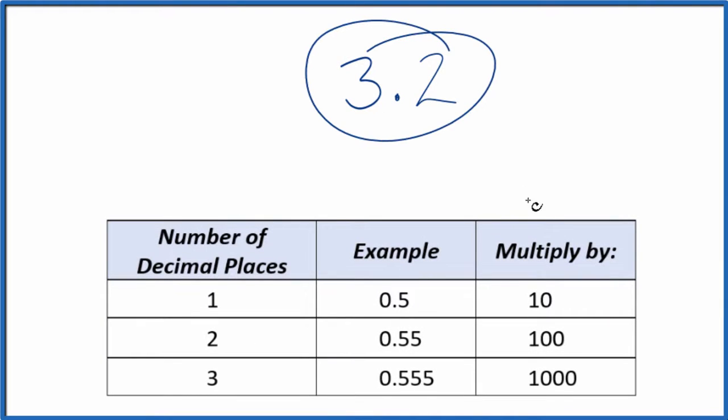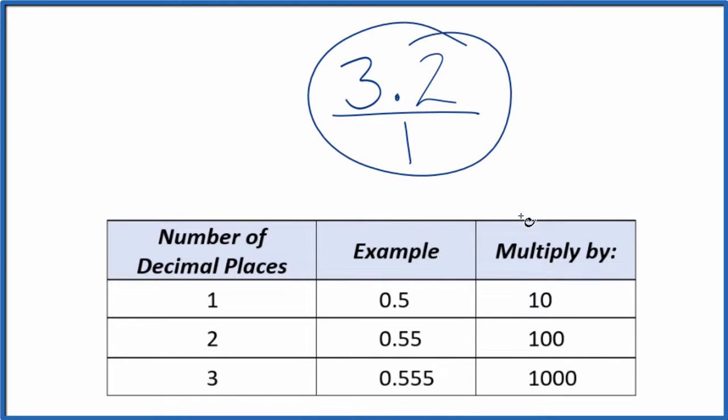Let's write the number 3.2 as a fraction and here's how we do it. So first off let's just write it as 3.2 over 1. We're dividing by 1 so it's still 3.2 but now we have the start of a fraction.